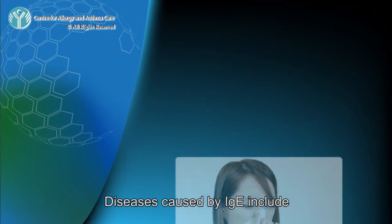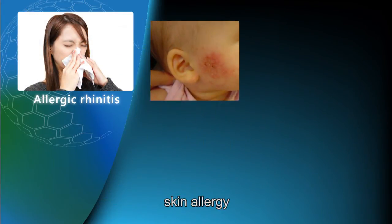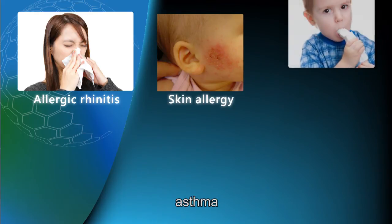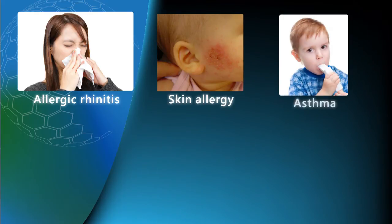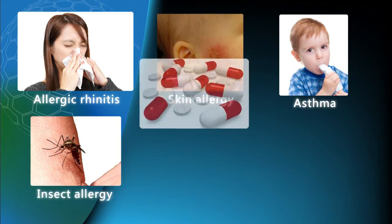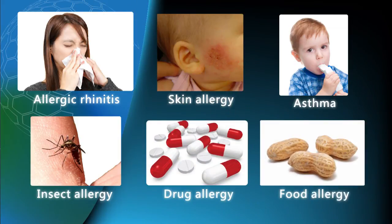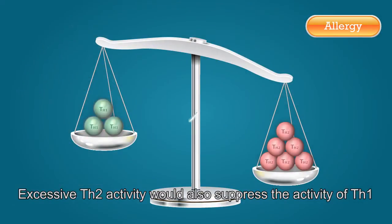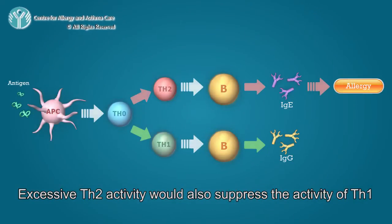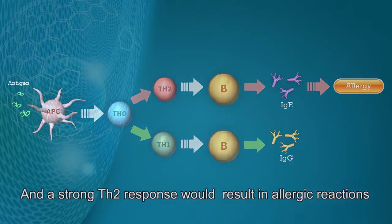Diseases caused by IgE include allergic rhinitis, skin allergy, asthma, insect allergy, some drug allergies, and some food allergies. Excessive Th2 activity would also suppress the activity of Th1, and a strong Th2 response would result in allergic reactions.